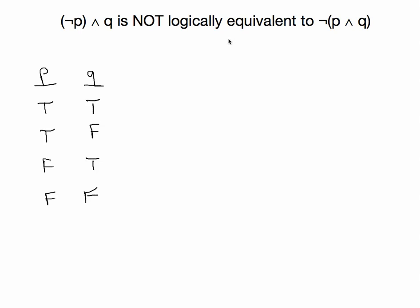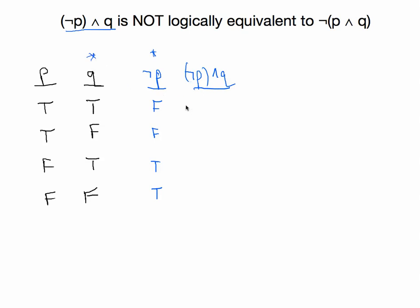Finally, let's show that a couple of statements are not logically equivalent using truth tables. We're going to work with not P and Q on one hand, and not (P and Q) on the other. A question might arise: do those parentheses really matter? Well, we want to see if those two statements are logically equivalent. If they are, the parentheses don't matter; if they are not, then they do matter. Let's build these one by one. I'll make a column for not P — false, false, true, true — and then one more column for not P and Q. This is an and, so both need to be true: false, false, true, false.